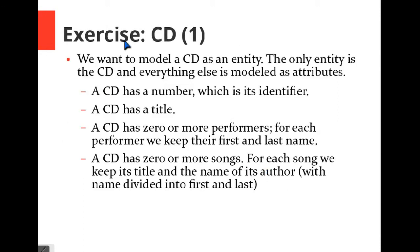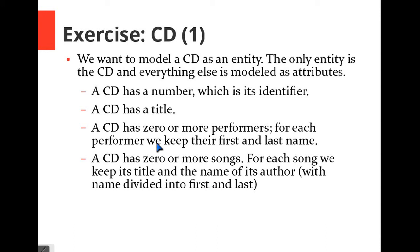The next question is called CD, and we are going to model a CD. The only entity is the CD, and everything else is modeled as an attribute. A CD has a number which is its identifier, a title, zero or more performers — each performer keeps their first and last name — and zero or more songs. For each song we keep its title and the name of its author, where the author's name is divided into first and last name. You can pause the video and try to come up with a solution.